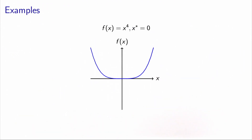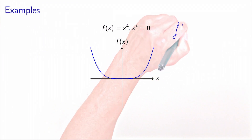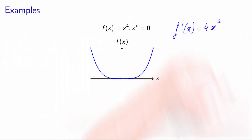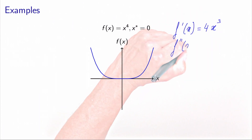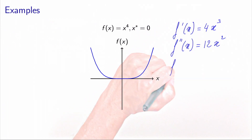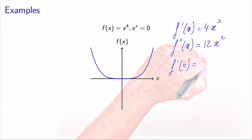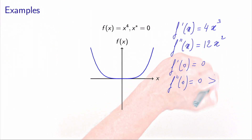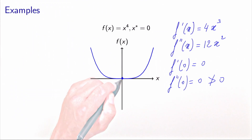Note that these conditions are not necessary. Let's take another example: f(x) = x⁴. In this case, f'(x) = 4x³ and f''(x) = 12x². So f'(0) = 0, which is fine, but f''(0) = 0 as well — so it's not strictly positive, and the sufficient conditions are not satisfied. Yet x = 0 is indeed a local minimum of the function, demonstrating that the sufficient conditions are not necessary.